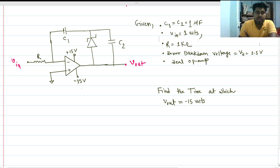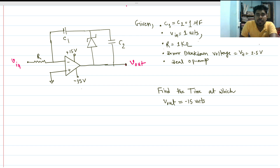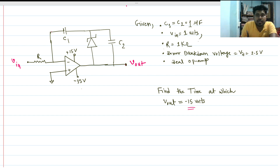Hi everyone, welcome to this session. Today we will solve this op-amp based circuit problem. We have to find the time at which the Vout voltage goes to minus 15 volts. We are given that C1 equals C2 equals 1 microfarad, the resistance value is 1 kilo ohm, this is an ideal op-amp, the Zener breakdown voltage is 2.5 volts, and V1 is 1 volt constant.